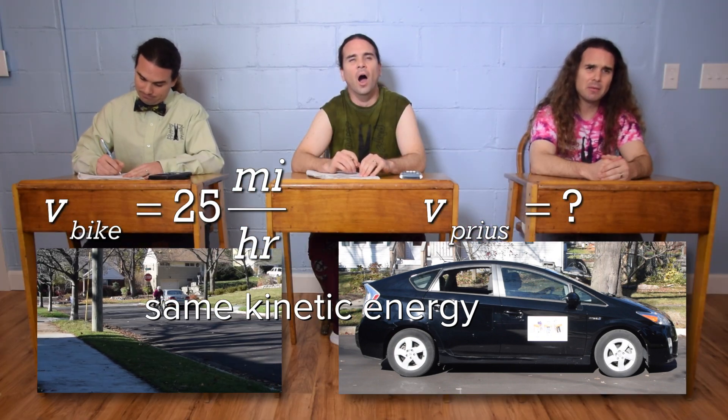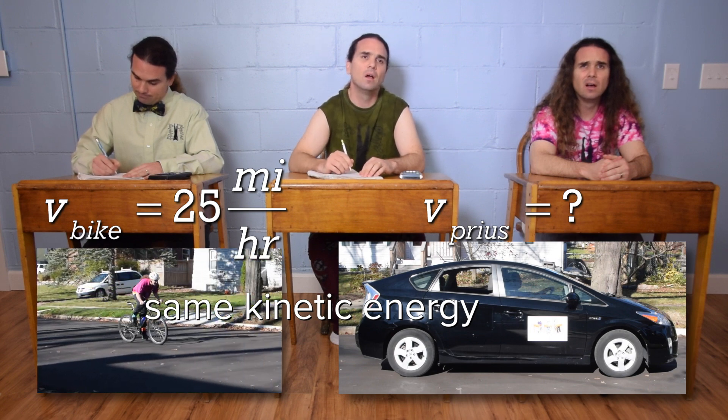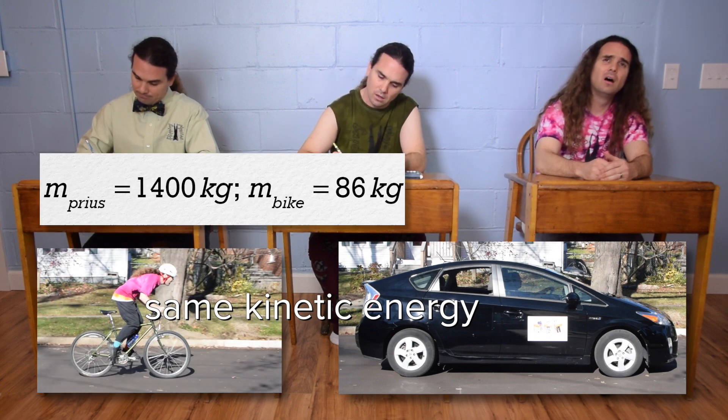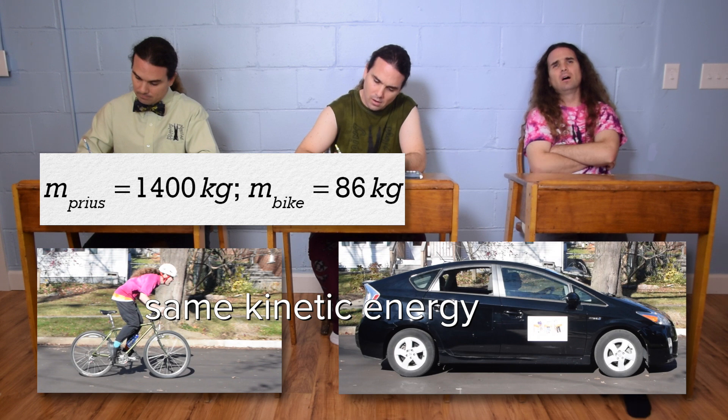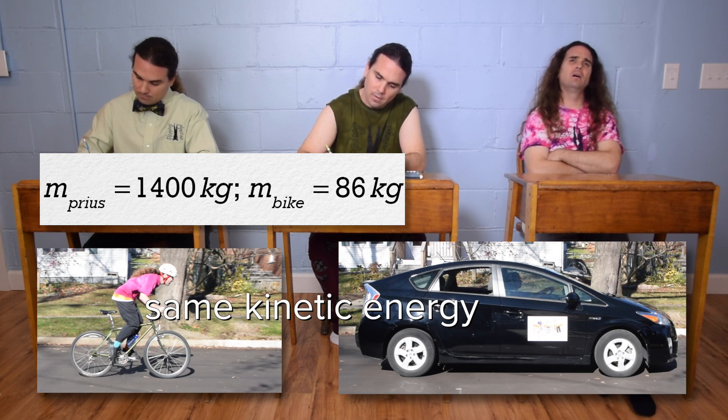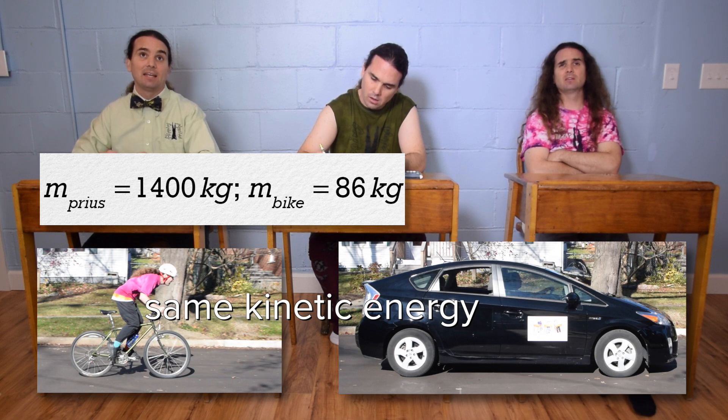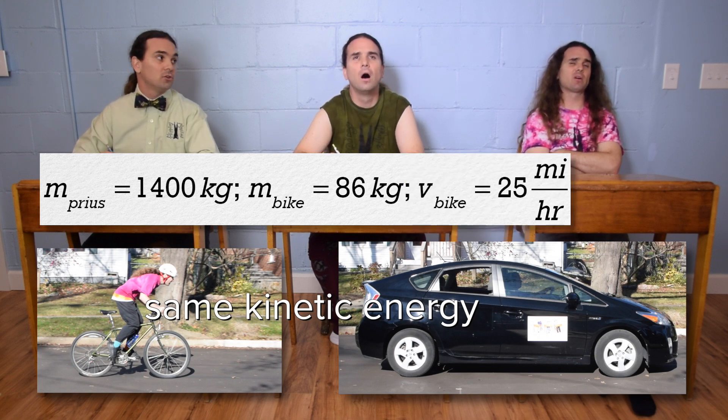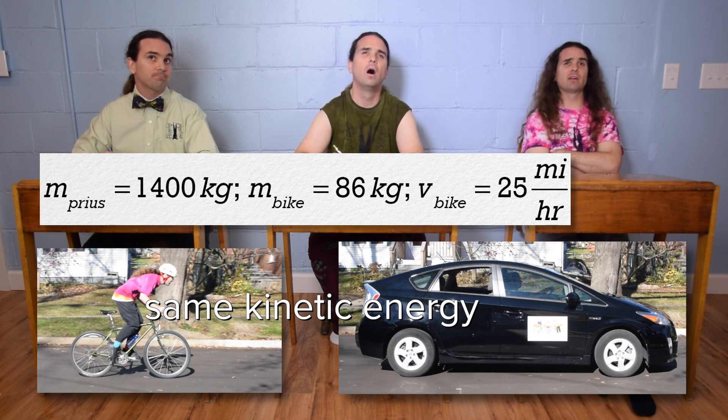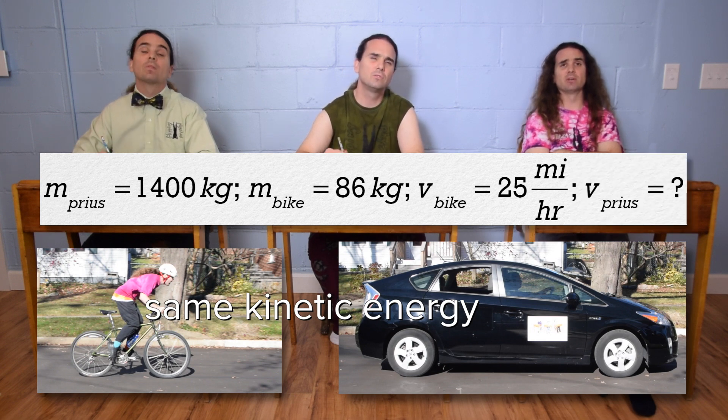Don't we need to know the masses of the objects? Yeah, okay, the mass of the bike with me on it is 86 kilograms, and the mass of the Prius with me in it is 1,400 kilograms. Let's see, we know the masses, we know the speed of the bike is 25 miles per hour, and we know we are trying to solve for the speed of the Prius.